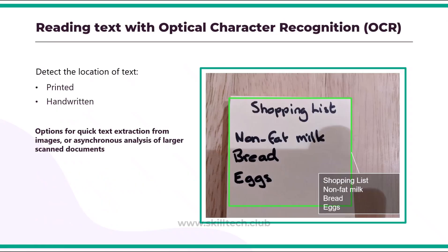Next we have OCR — optical character recognition — which helps you to read text from images and photos which may also have handwritten notes. OCR enables artificial intelligence systems to read text in images, enabling applications to extract information from photographs, scanned documents, and other sources of digitized text. This service provides a read API that software developers can use to extract both printed and handwritten text from images.